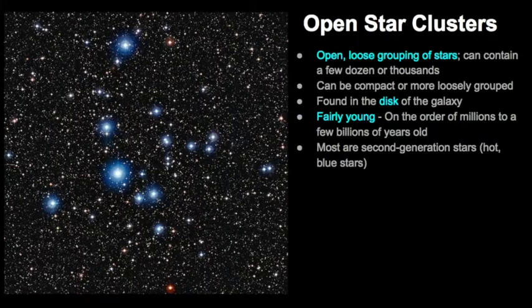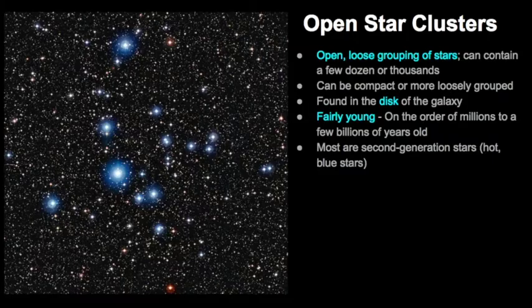Now let's review open clusters. Open clusters are often open and loose groupings of stars. They can contain a few dozen stars or even thousands of them, and sometimes they can be compact or loosely grouped. What's unique about them is that they're found within the disk of the galaxy, and they're pretty young — on the order of millions to maybe a few billion years old, but they definitely don't show the age that globular clusters have.